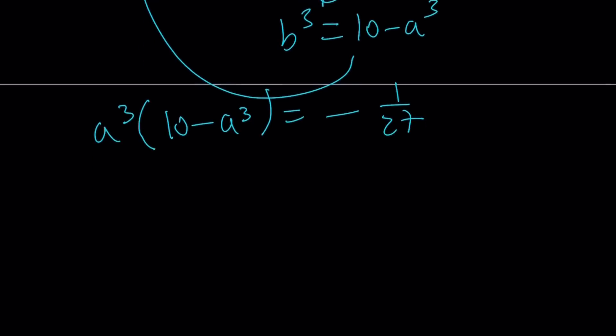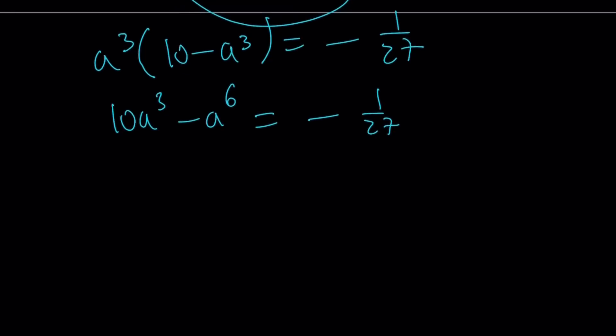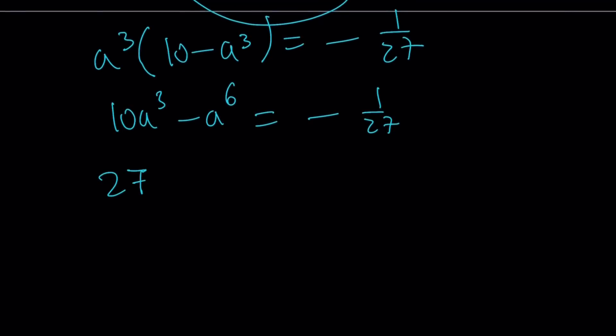And then go ahead and substitute that into the first equation. That gives us a³(10 - a³) = -1/27. I know this doesn't look very good, but don't worry, we're going to simplify this. And if you distribute, you get 10a³ - a⁶ = -1/27. Let's just multiply both sides by 27 to get rid of the fraction.